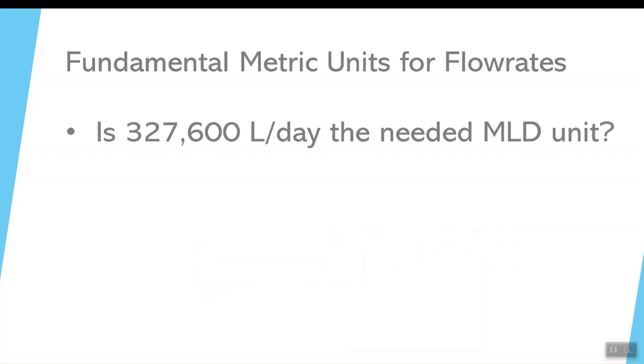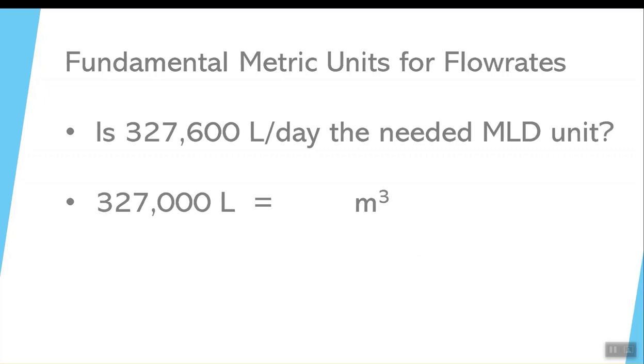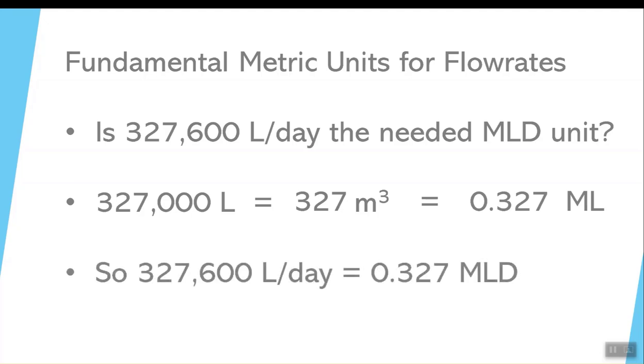But that is not the right final unit. We want to get to megalitres per day. We learned in the first video that to go from liters to cubic meters, you move the decimal three spots to the left, so that's 327 cubic meters. Move it another three spots to the left, and that works out to approximately 0.327 megalitres per day. So that's how many megalitres there are in one day.